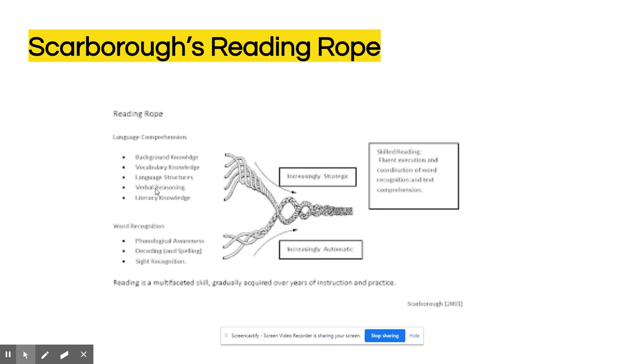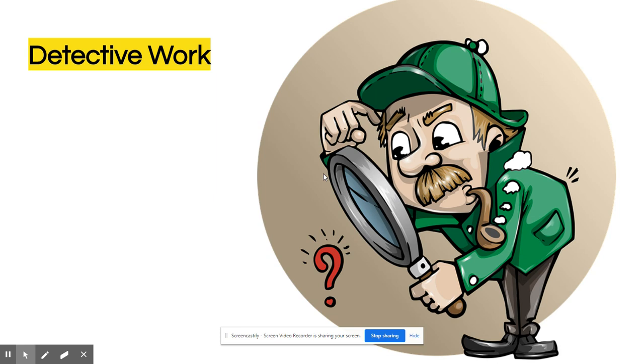Scarborough's reading rope is a very famous image that also shows the breakdown of sub-skills for both word recognition and language comprehension. It's that more complex look at the simple view of reading, if you will, and this image also is presented in Ohio's plan to raise literacy achievement.